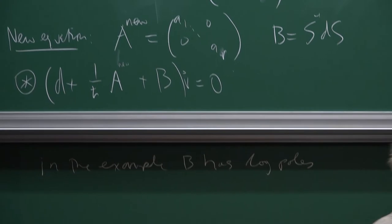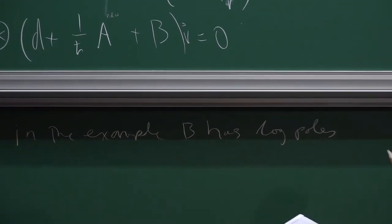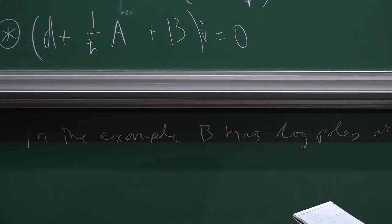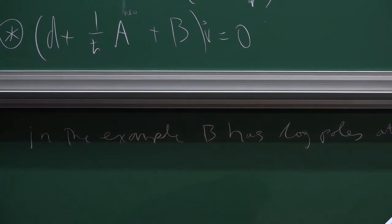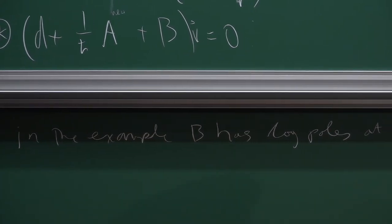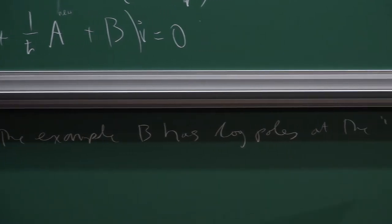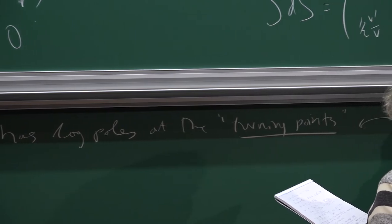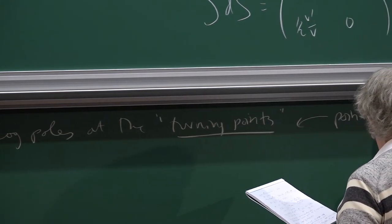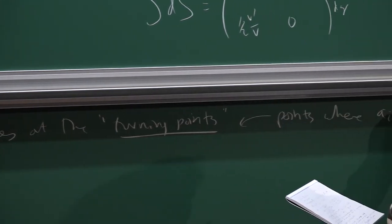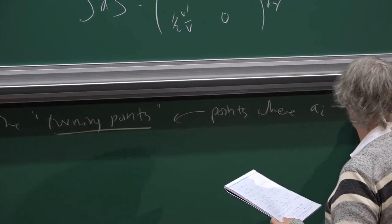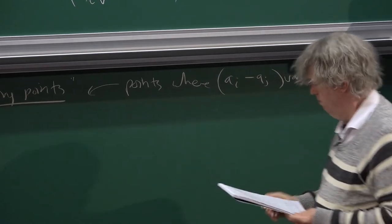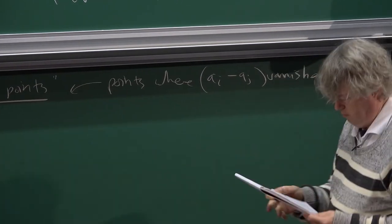This is the equation I actually want to look at. In the example, B actually has logarithmic poles at the turning points. The turning points in general are the points where A_i minus A_j vanishes.